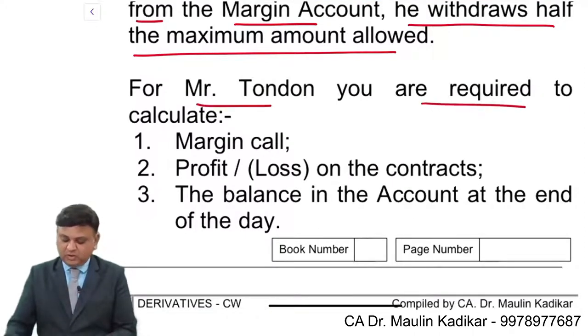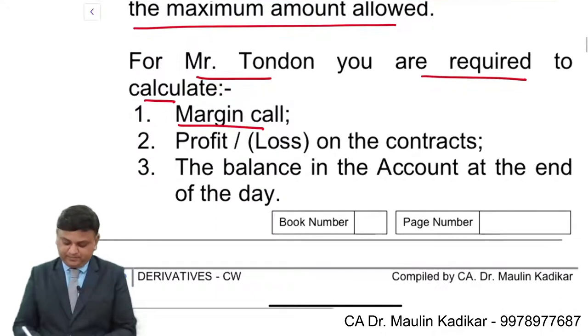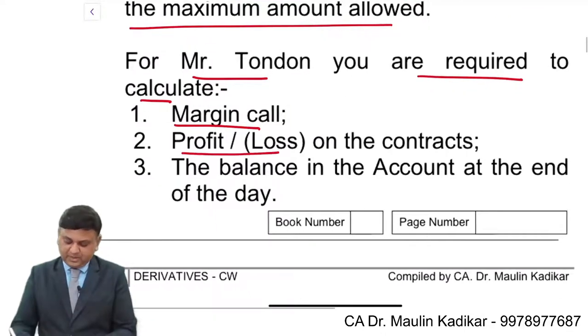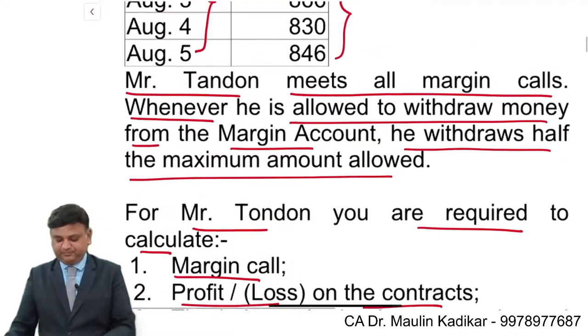For Mr. Tundon, you are required to calculate: first, the margin call; second, profit or loss; and third, the balance in the account at the end of each day.